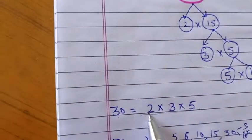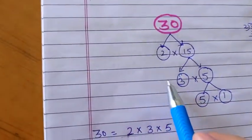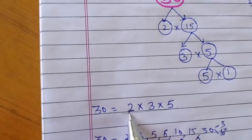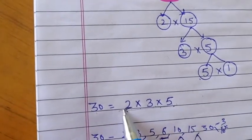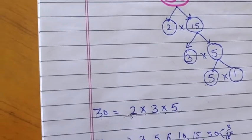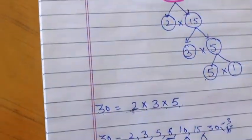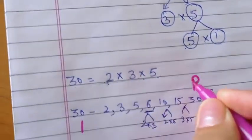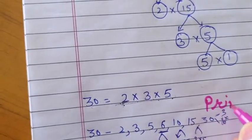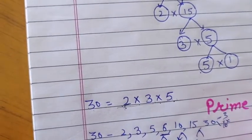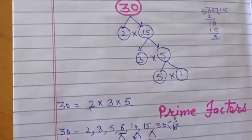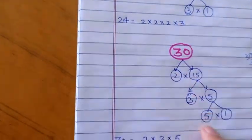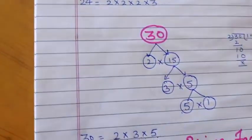But 2, 3, and 5 we can't split them. So these factors we call prime factors. And this method we call factor tree.